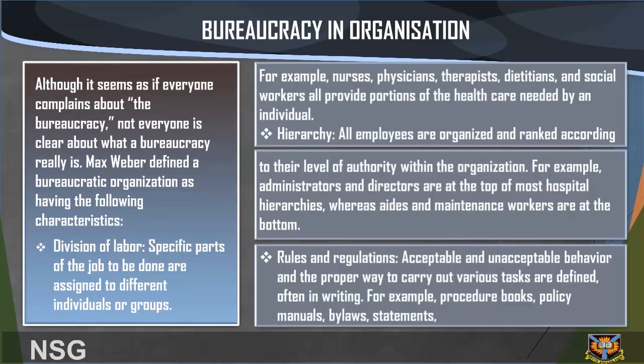Bureaucracy in organizations: Although everyone seems to complain about bureaucracy, not everyone is clear about what it really is. Max Weber defined a bureaucratic organization as having the following characteristics. First, division of labor: specific parts of the job are assigned to different individuals or groups. For example, nurses, physicians, therapists, dietitians, and social workers all provide portions of the healthcare needed by an individual.